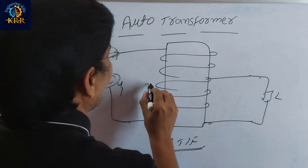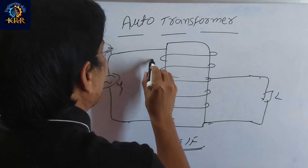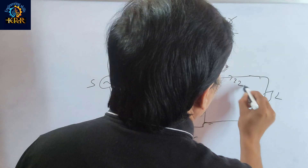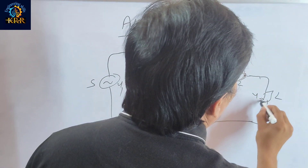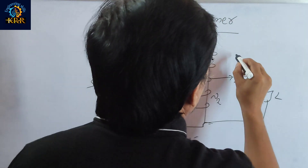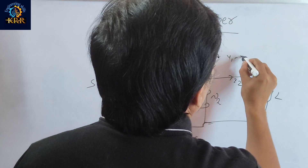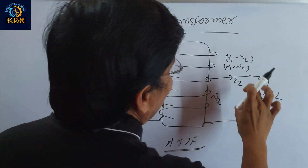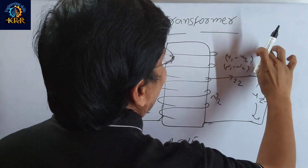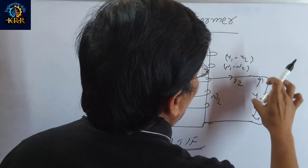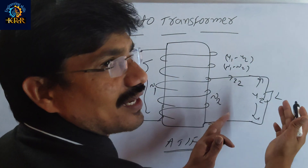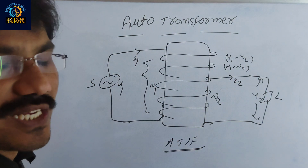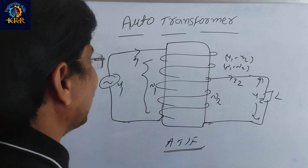This voltage is called V1. This term is called N1. This current is called I1. This current is called I2. This term is called N2. This voltage is called V2. This voltage is called V1 minus V2, and this term is called N1 minus N2. This is the induction process, and this is the conduction process. In the output, both conduction power and induction power are present. Now we explain the drawbacks one by one.